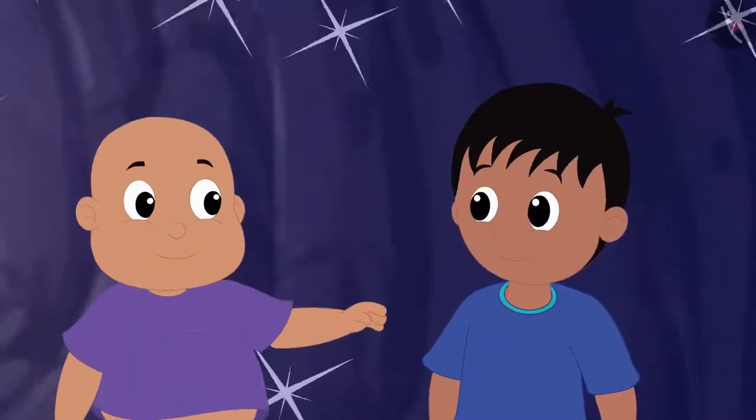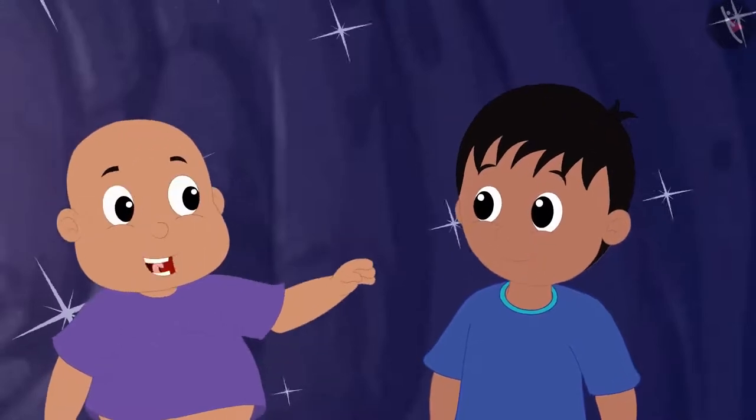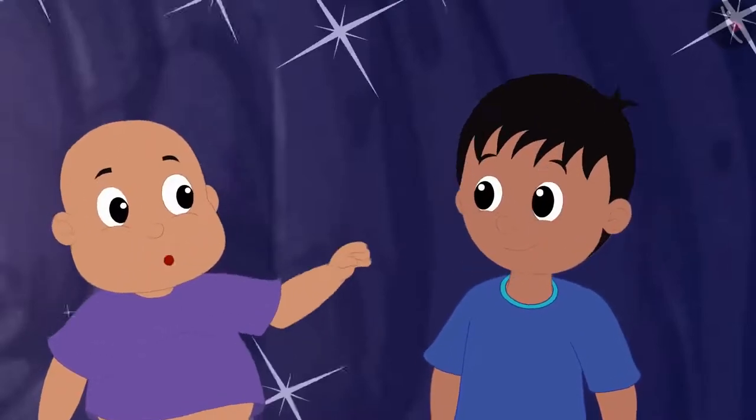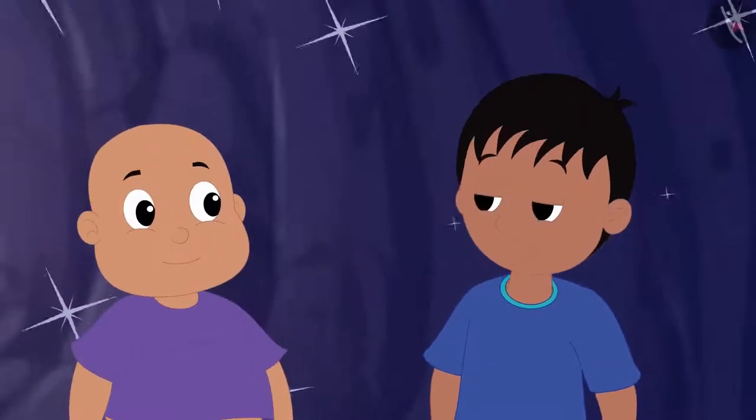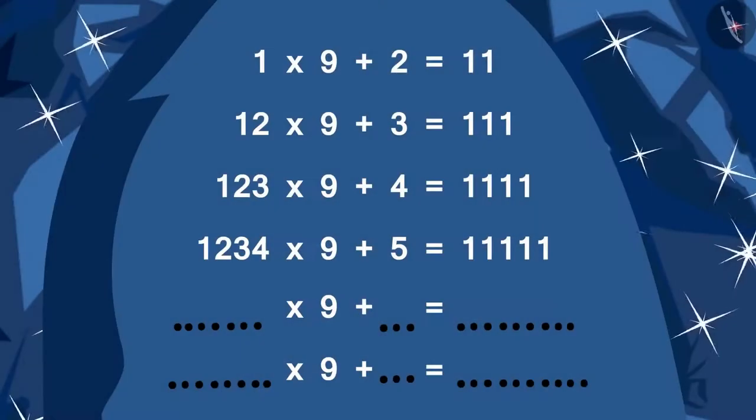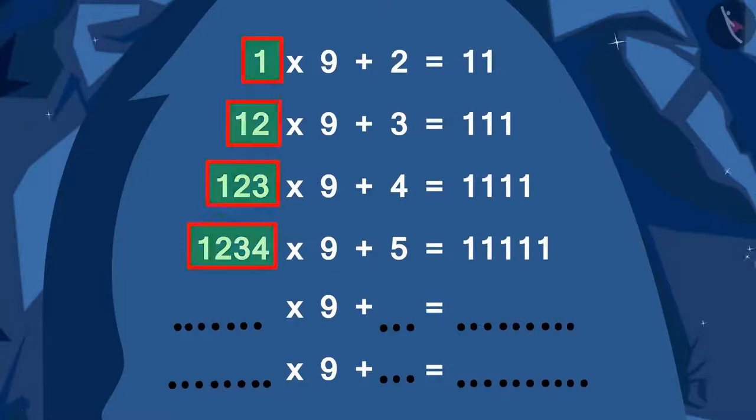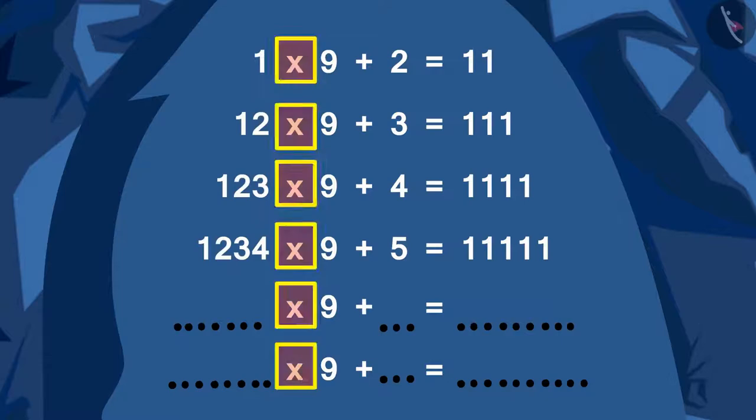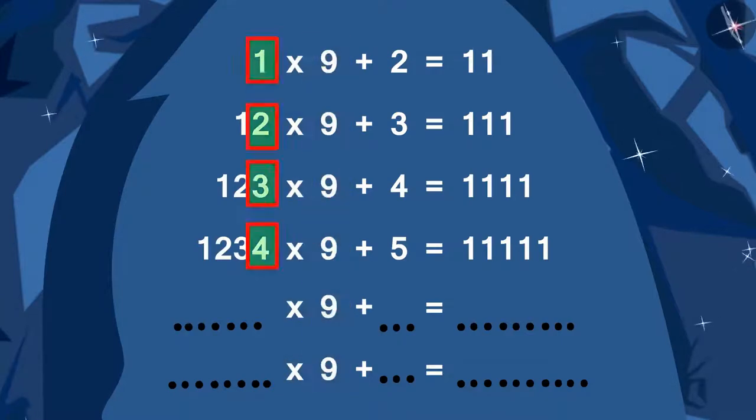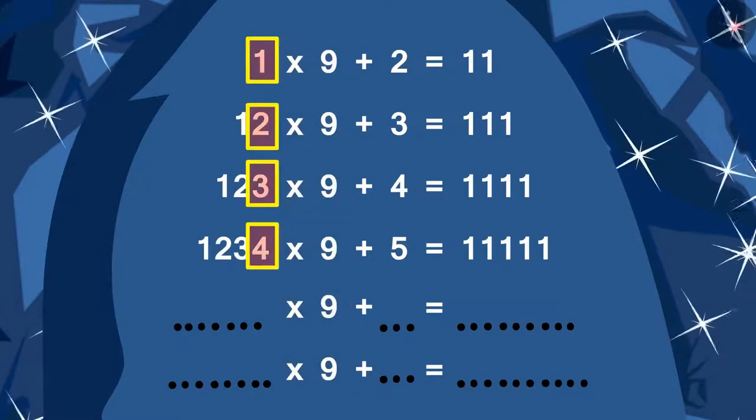Yes, Raju. Look, it looks like a number pattern. Let us try to find its sequence, Bablu told Raju. See, Bablu, every time a new digit is added to the number that is multiplied by 9, and it is one more than its previous digit.